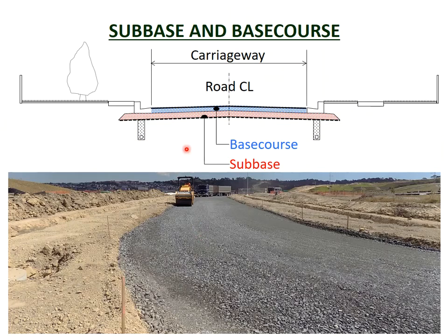In most roads, the carriageway is made up of several layers of granular materials topped with a bitumen surface. Collectively, the sub-base, base course and surfacing are called the pavement — the main structure which distributes traffic loads down to the subgrade. The bottom layer is called the sub-base course, or more usually just the sub-base. The sub-base has a mix of sand and varying sized stones with a maximum size of 65mm, often called GAP65 — General All Passing a 65mm sieve.